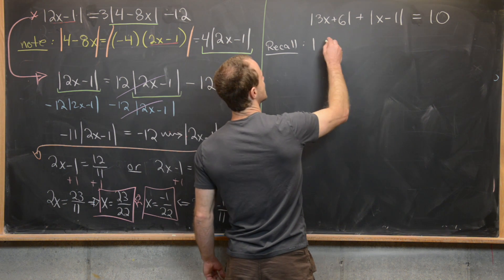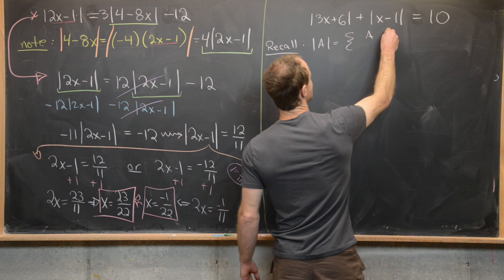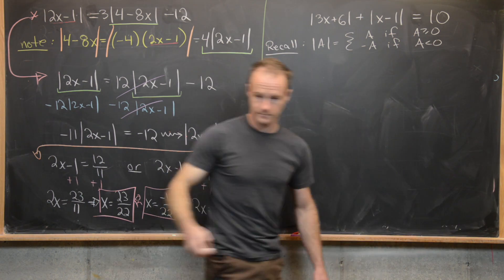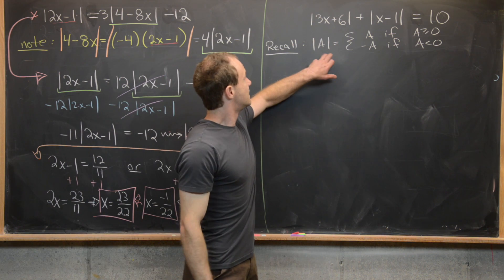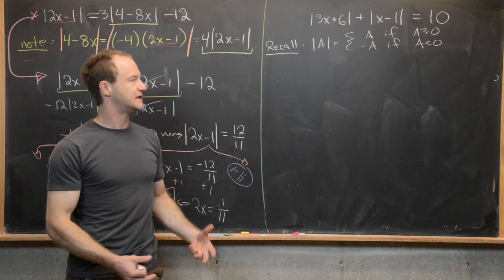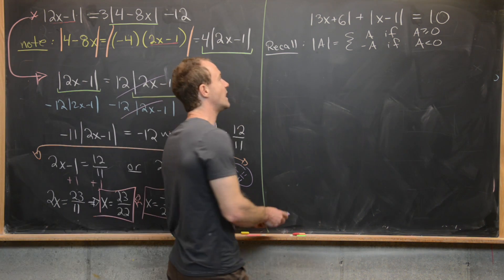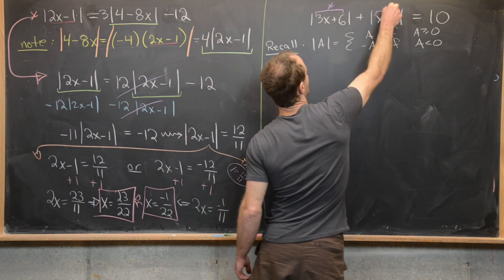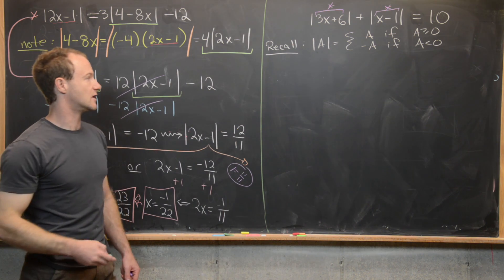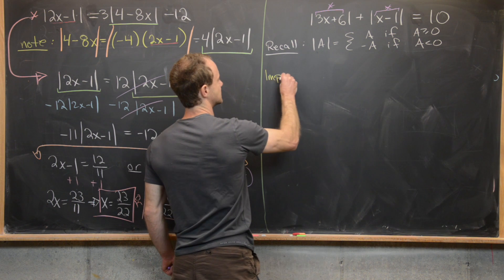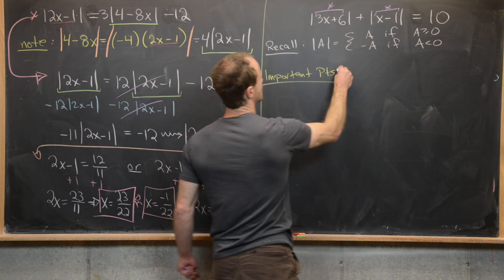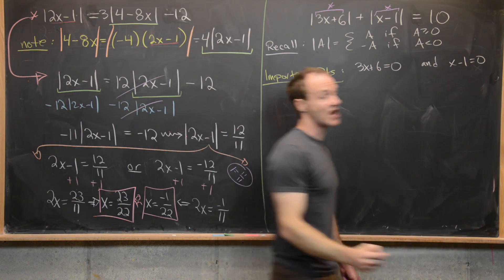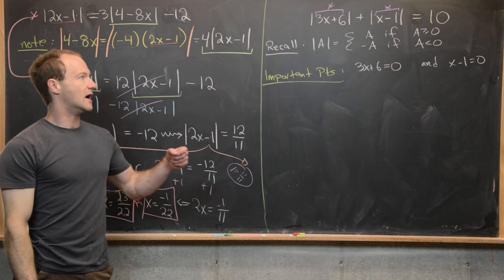Let's recall the definition of the absolute value. The absolute value of A equals A if A is greater than or equal to 0, and equals negative A if A is less than 0. This expression changes its identity at the point where the stuff inside the absolute value equals 0. So important points for solving this equation occur when 3x plus 6 equals 0 and when x minus 1 equals 0. Note these are not the solutions — just important points for solving.